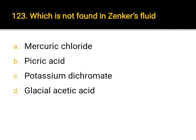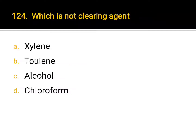Which is not found in Zenker's fluid? A. mercury chloride, B. picric acid, C. potassium dichromate, D. glacial acetic acid. Correct answer: B. Picric acid.